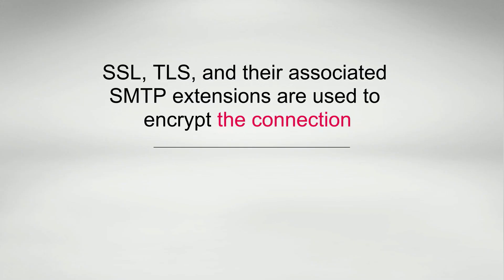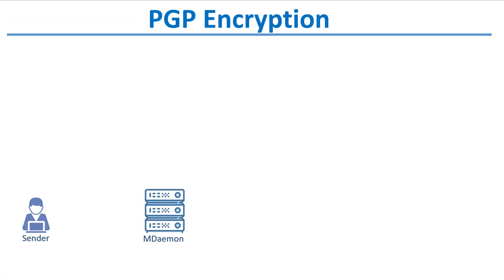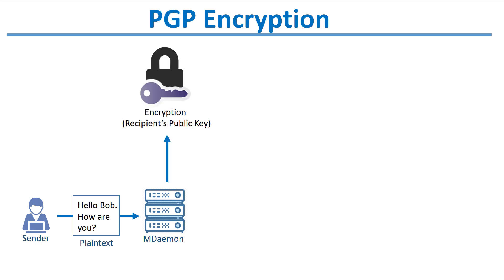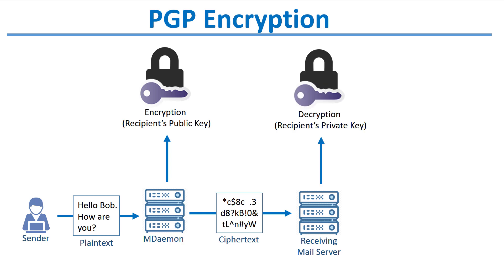While SSL, TLS and their associated SMTP extensions are used to encrypt the connection, OpenPGP is used to encrypt the actual email message itself. This provides an extra layer of security in case SSL and TLS are not guaranteed. When an MDAEMON user sends an email, the message is encrypted using the recipient's public key. The encryption process converts the message from plain text to cipher text, and then sends it to the receiving mail server where it is decrypted using the recipient's private key and then delivered to the recipient's mailbox.